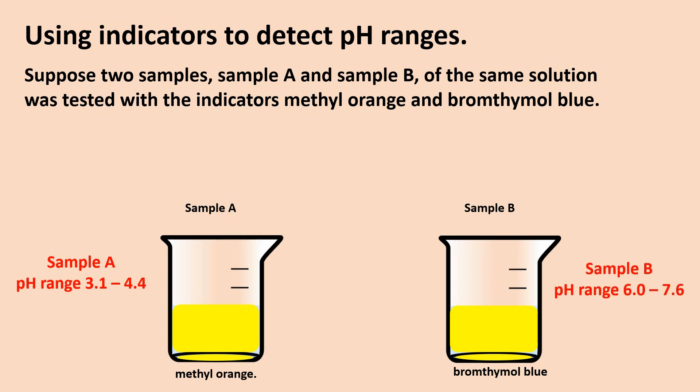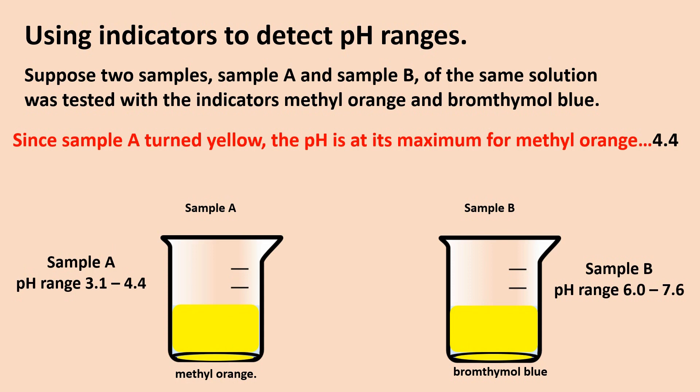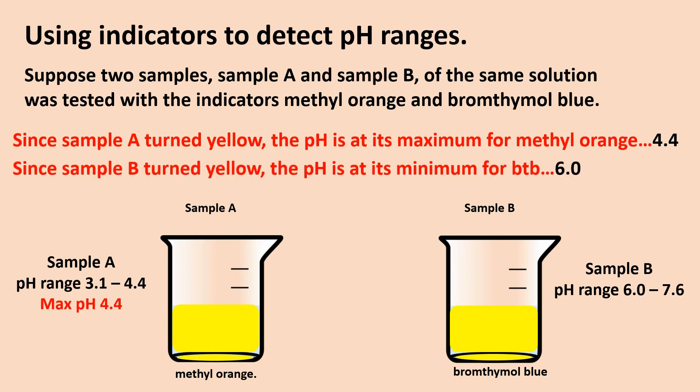Sample B must have a pH range of 6.0 to 7.6, which is the pH range for bromthymol blue or BTB. Since Sample A turned yellow, the pH is at its maximum for methyl orange, which is 4.4. Since Sample B turned yellow as well, the pH is at its minimum for bromthymol blue, which is 6.0.